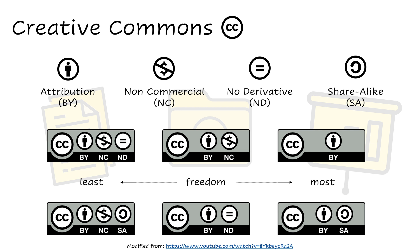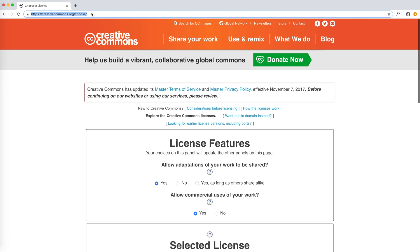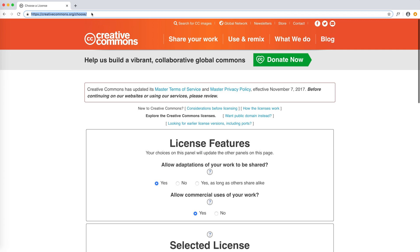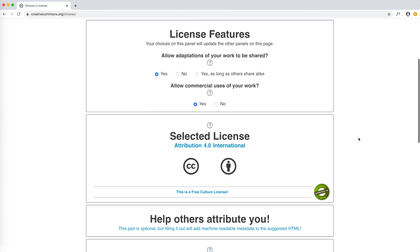As we can notice, in all these licenses attribution is always present. But if we are not interested in being cited, we can use the license CC0, which means that our work is in the public domain and free of copyright restrictions. To easily choose what license we want, we can go to creativecommons.org/choose and answer two simple questions.